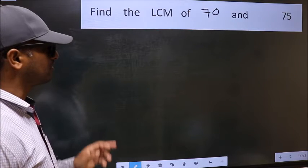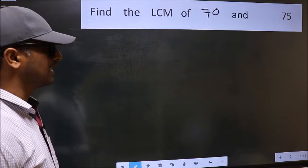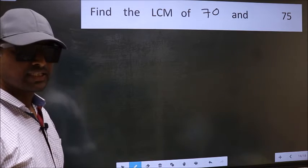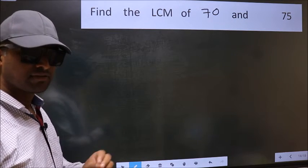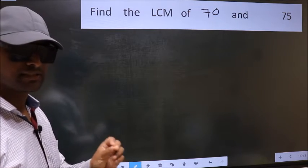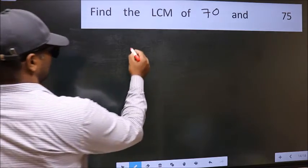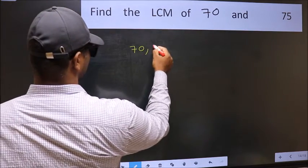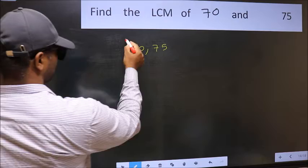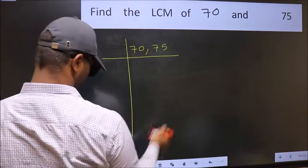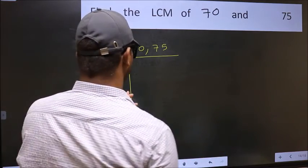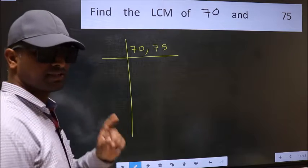Find the LCM of 70 and 75. To find the LCM, we should frame it in this way: 70, 75. This is your step 1.